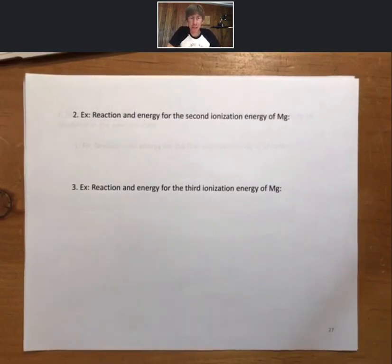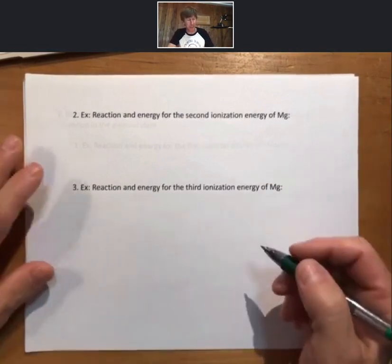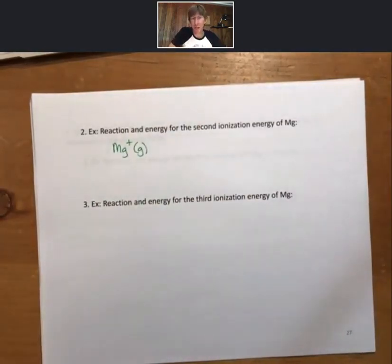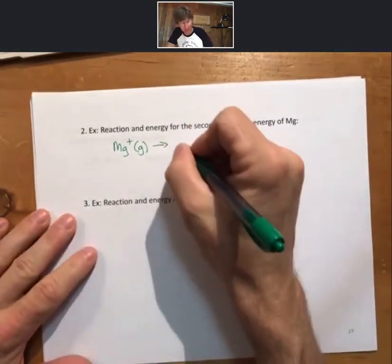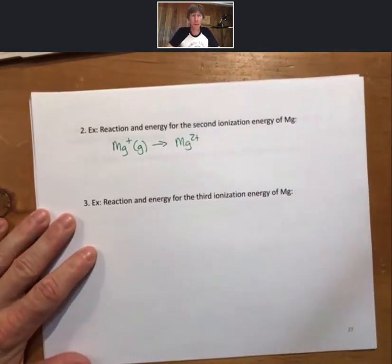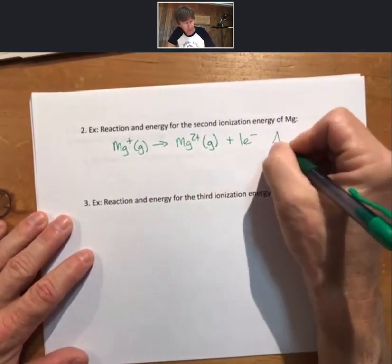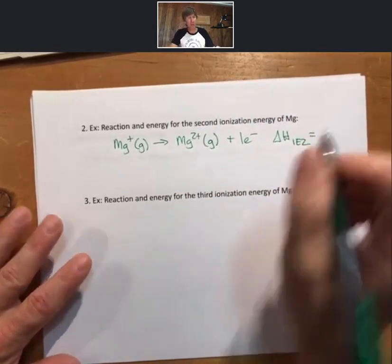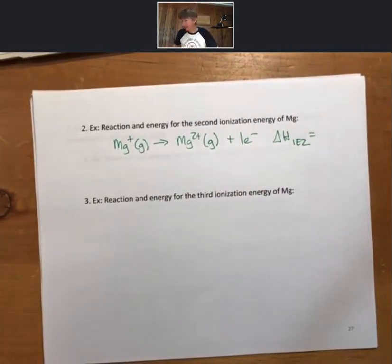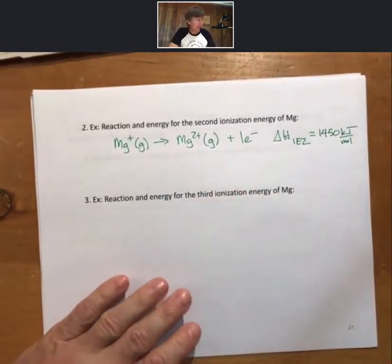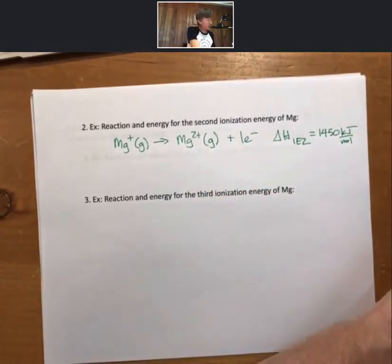Now, let's do the second ionization energy reaction. It is for removal of the second electron. It means that we're starting with a magnesium plus one. It is in the gas phase. We remove a second electron to get magnesium plus two. Again, in the gas phase. This one will be delta H IE2. And let me make sure I get this number right. Well, 1450 kilojoules per mole.